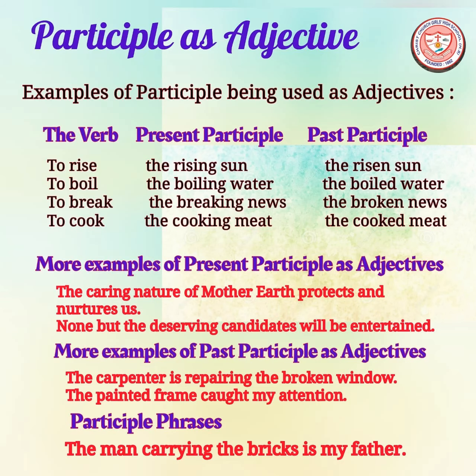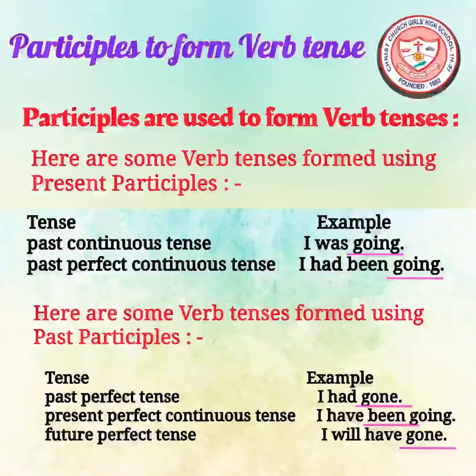It is common to see participles in participle phrases. A participle phrase also acts like an adjective. For example: 'The man carrying the bricks is my father.' The participle phrase 'carrying the bricks' describes 'the man.' The phrase starts with a participle, and that participle is used as an adjective. These are the basic usages of participle as adjective.